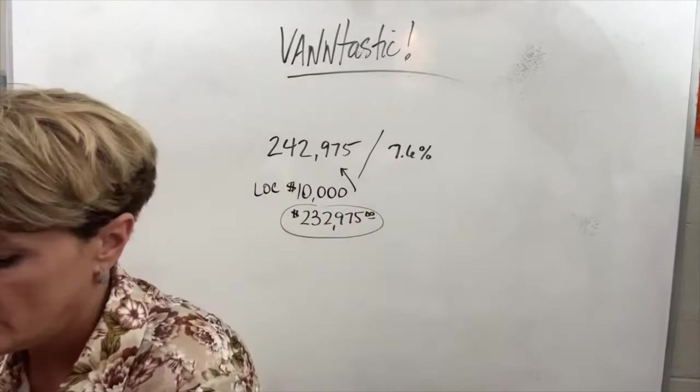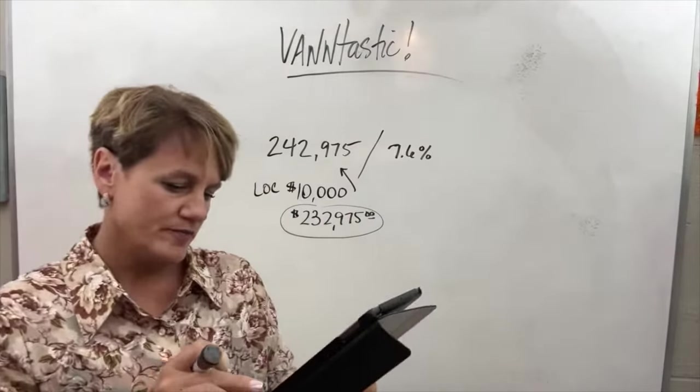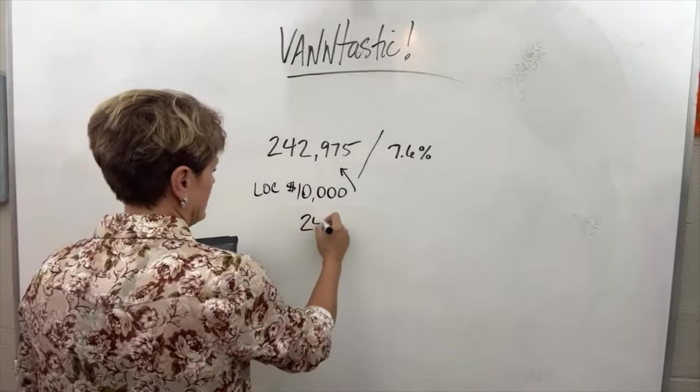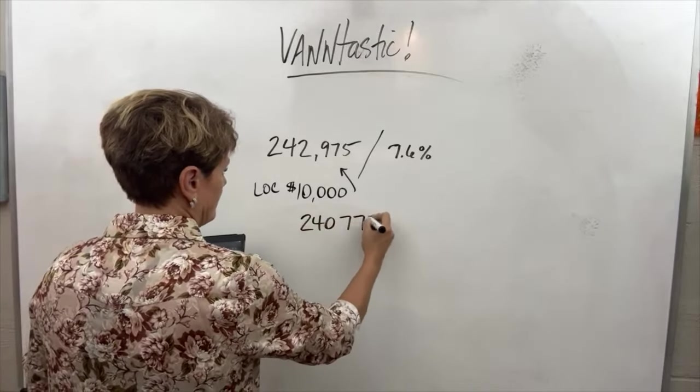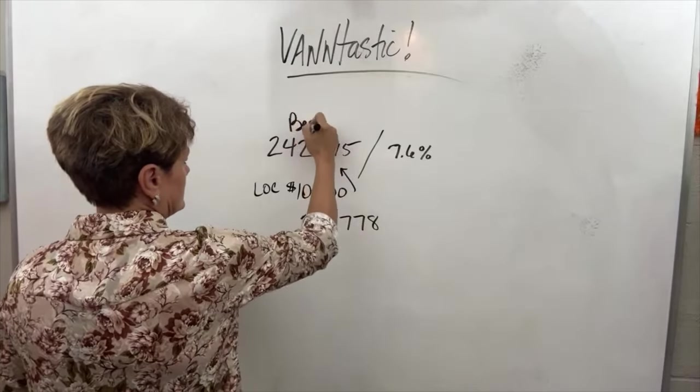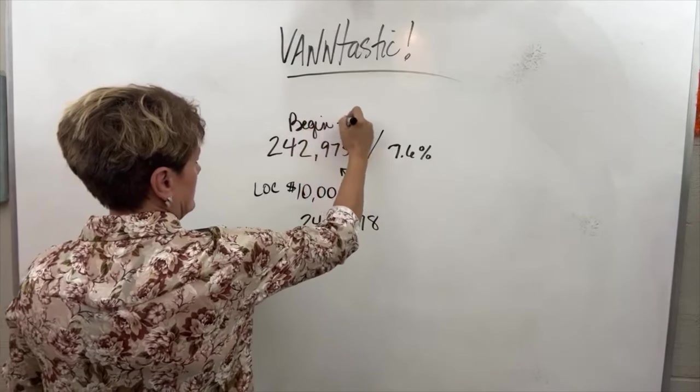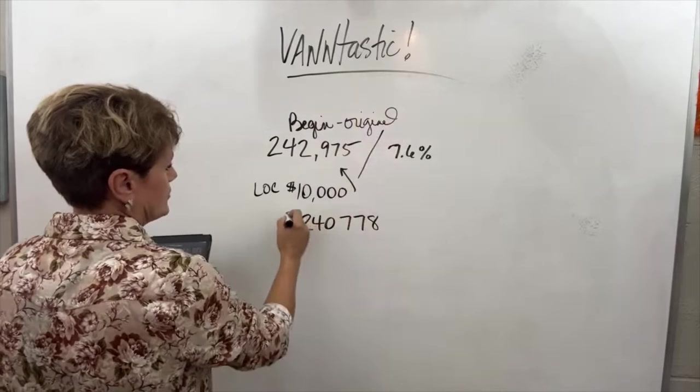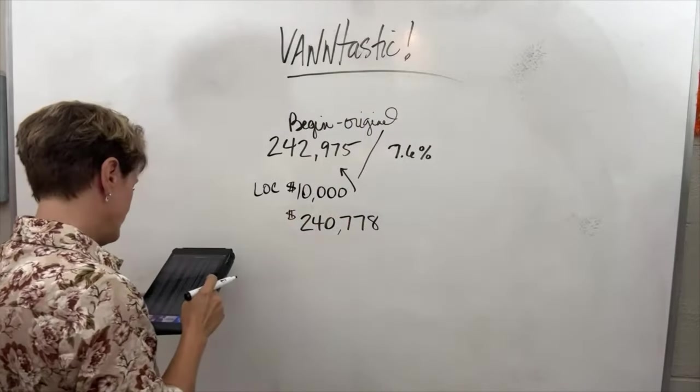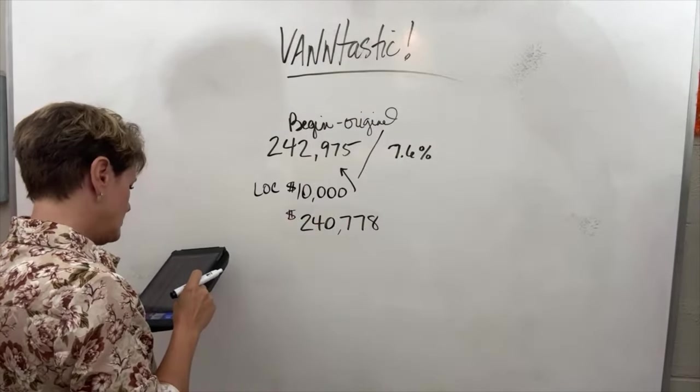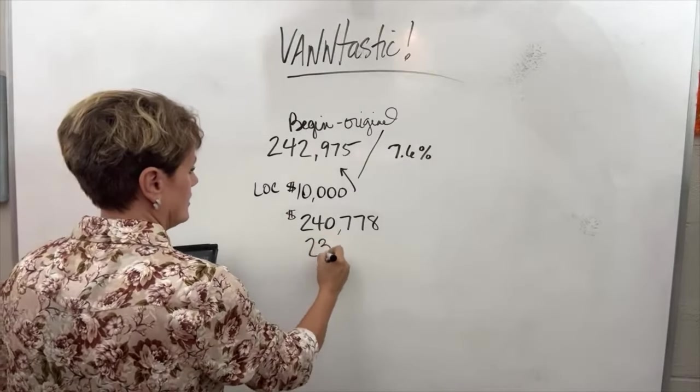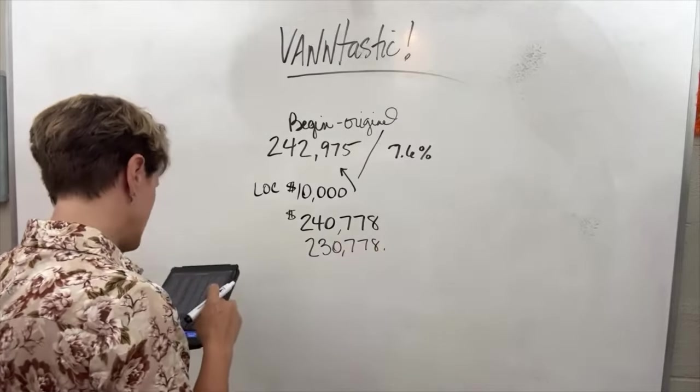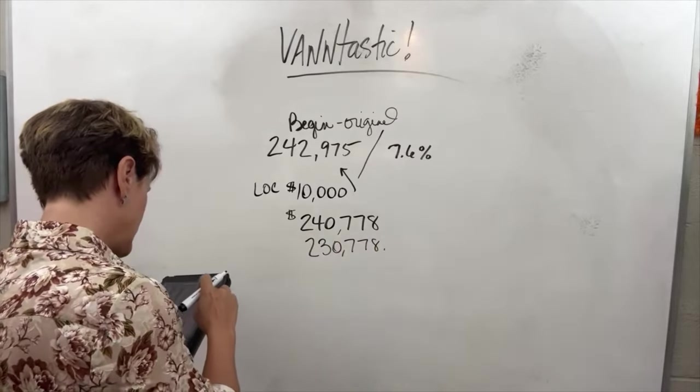So according to Carl's mortgage calculator, a year in, he would be at $240,778 approximately. So this is the begin, this is the original amount. This is where he should be after one year.